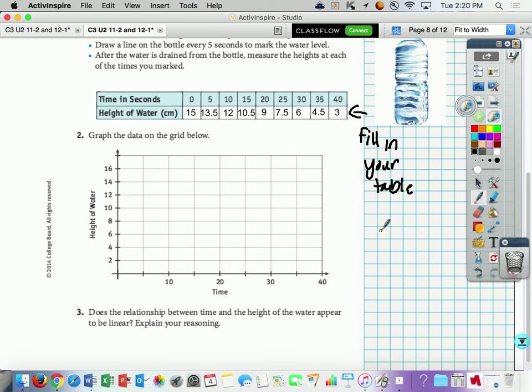So our first is 0-15, so I'm going to go from 0 up to 15, put a dot. Then I'm going to go to 5. This is 5 right here. 5 and it's going to be 13.5. Okay, then we're going to do 10, which is 12. Then we're going to do 15, which is 10.5. Okay, then 20 is 9. 25 is 7.5. 30 is 6. 35 is 4.5. 40 is 3.